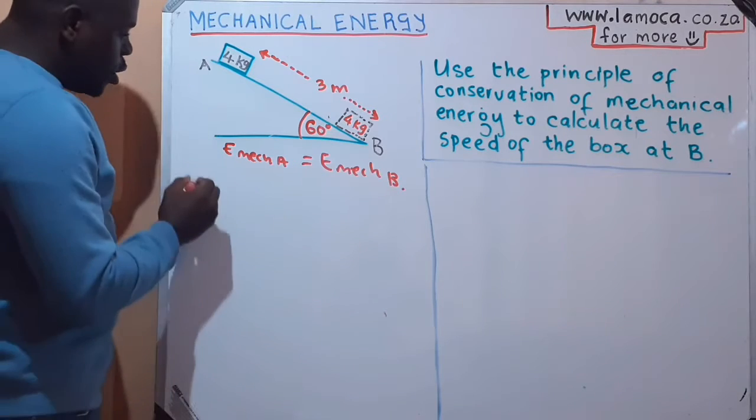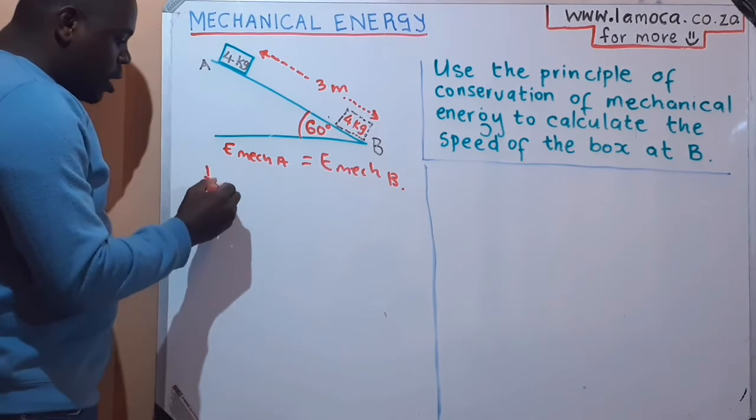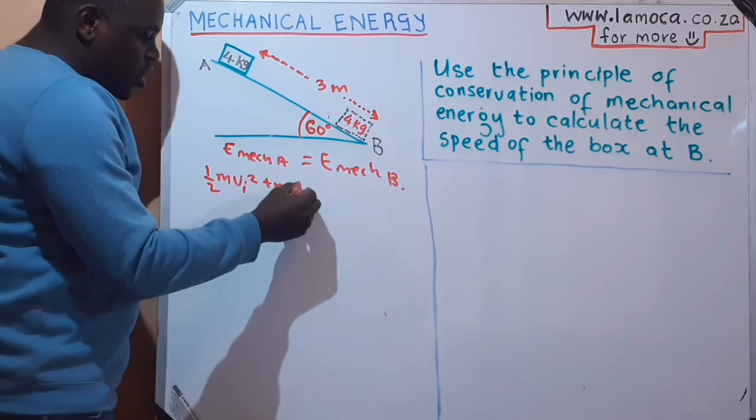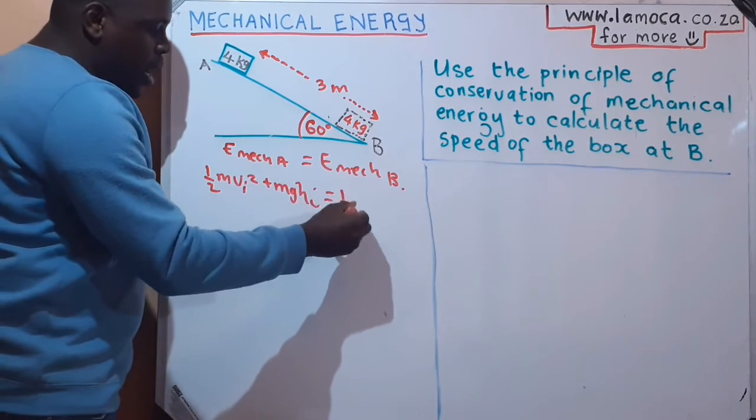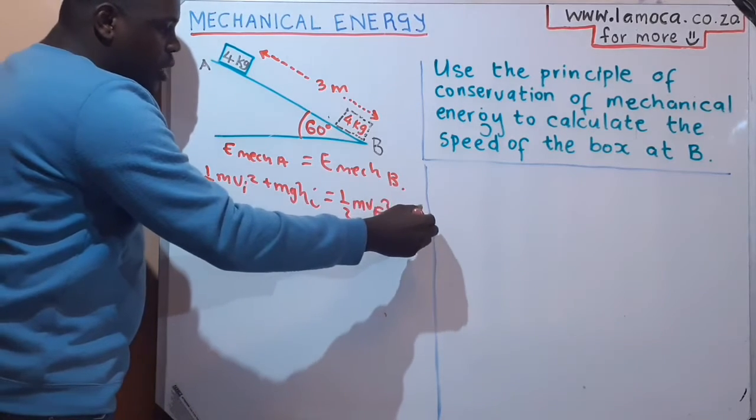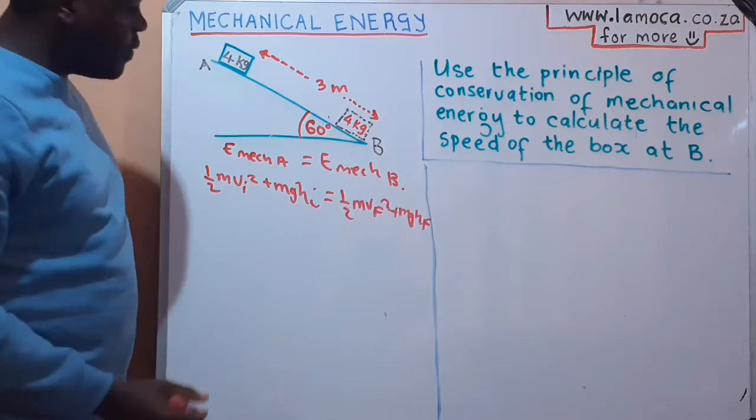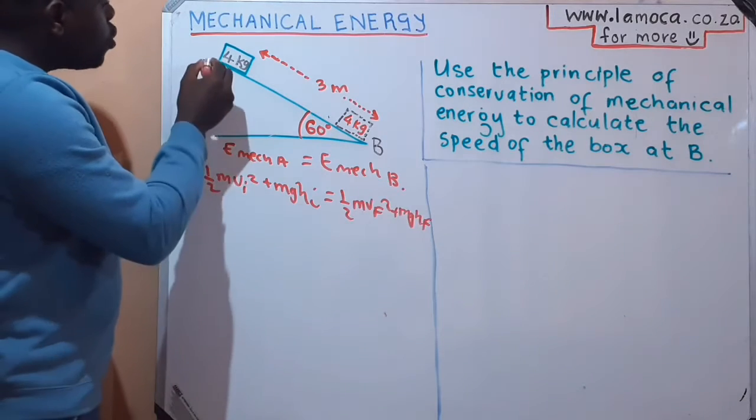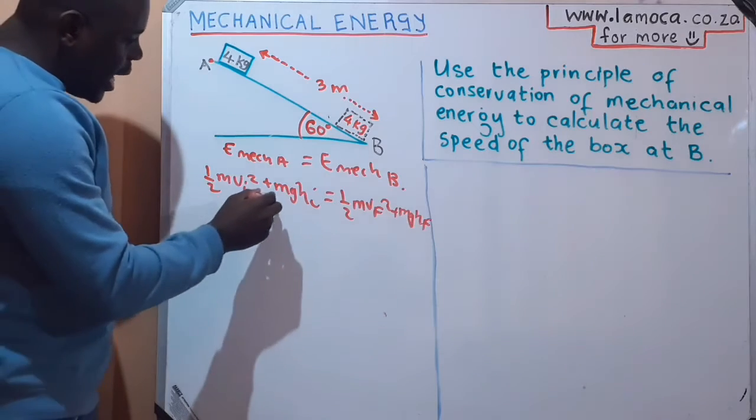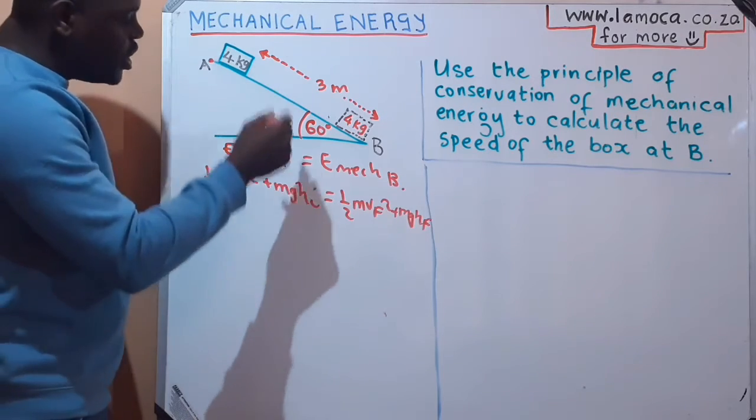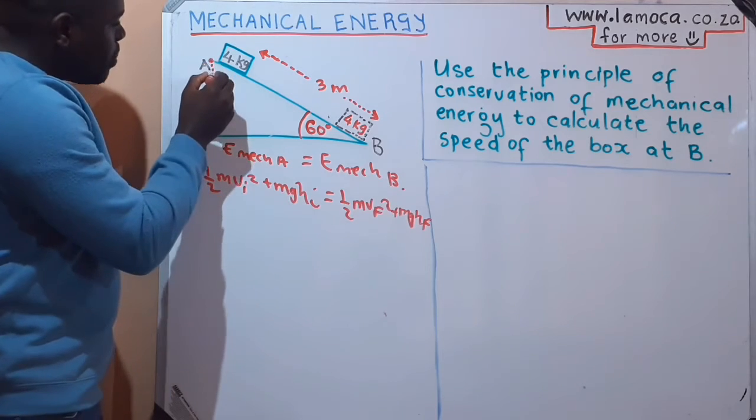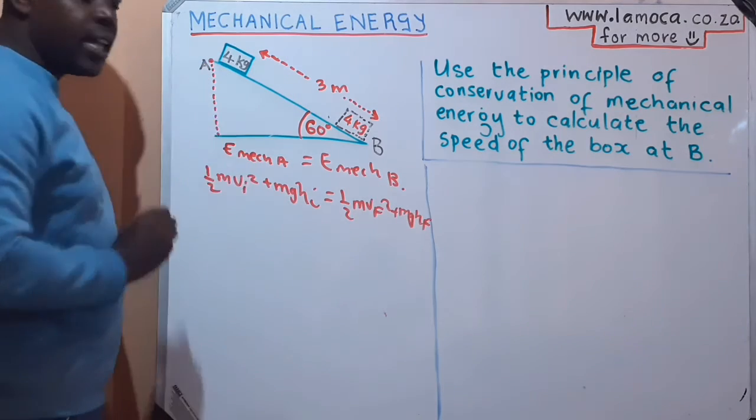Which means E_mech at point A is equal to E_mech at point B. If you expand that, you find that you have ½mv_i² + mgh_initial = ½mv_f² + mgh_final.